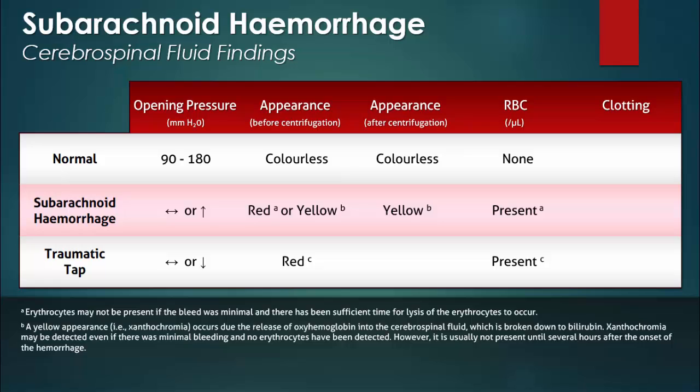A traumatic tap also yields a sample with a reddish color due to the presence of erythrocytes. To help distinguish the error of a traumatic tap, the red blood cell count is measured in successive tubes. With a traumatic tap, the red blood cell count will decline as tubes are collected — the first tube will have the greatest number of erythrocytes, while the last tube will have the fewest.